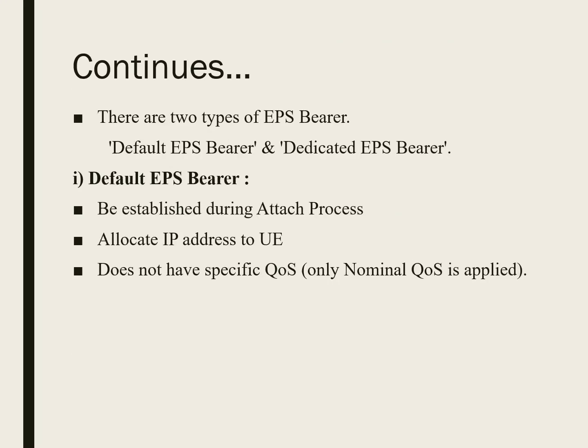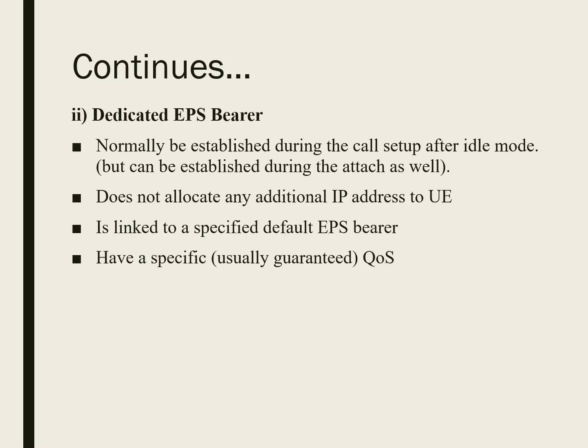There are two types of EPS Bearer: Default EPS Bearer and Dedicated EPS Bearer. The Default EPS Bearer is established during the attach process, and a proper IP address is allocated to the user equipment. During this process, only a nominal or default quality of service is applied. The Dedicated EPS Bearer is established during call setup after an idle mode. No additional IP address is allocated; the default IP address is used. It is linked to a specified default EPS Bearer and has a guaranteed quality of service.